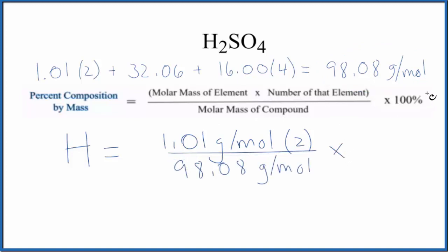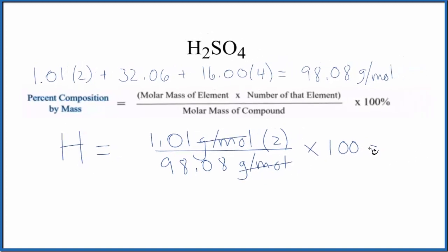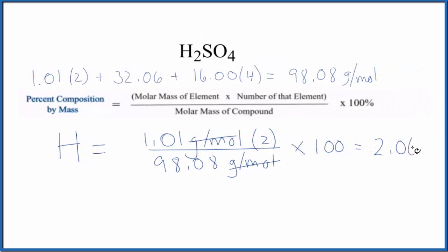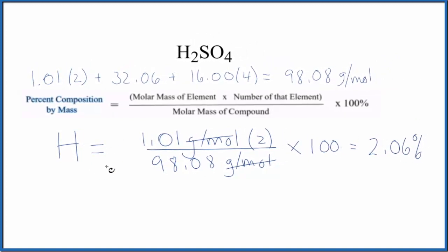Note that grams per mole, those units cancel out, so we end up with 2.06% for the hydrogen. What that means is if we have a mass of this H2SO4, 2.06% of that mass will be due to the mass of the hydrogen atoms.